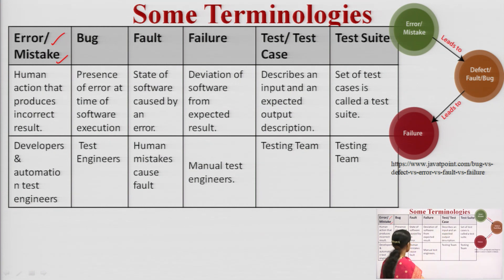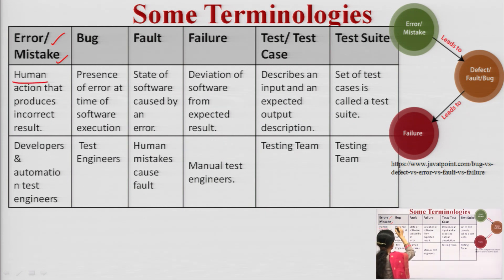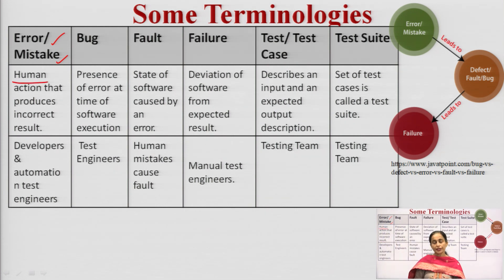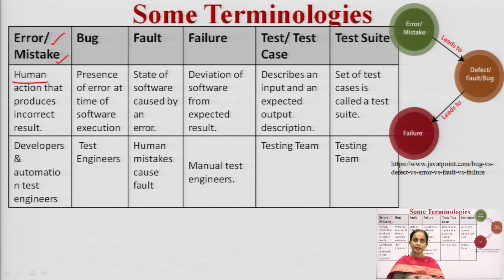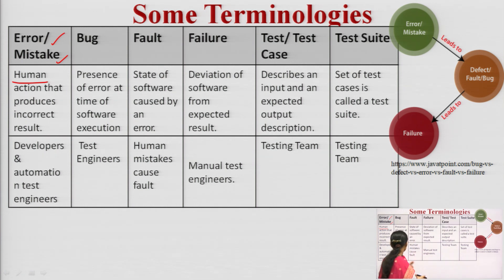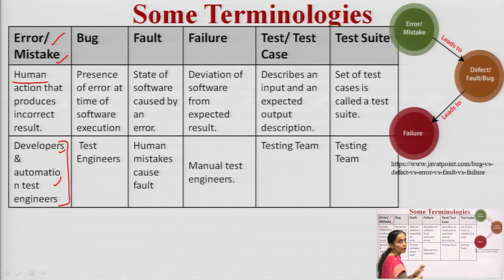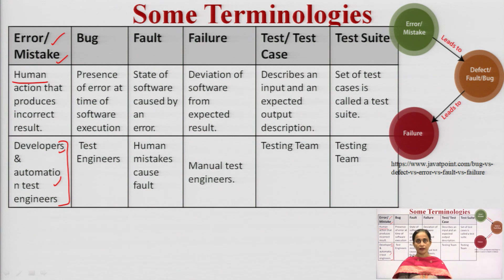What is an error? Error is a human action that produces an incorrect result. It is also known as a mistake. Developers and automation test engineers use this term to define mistakes.